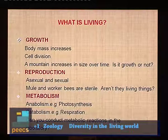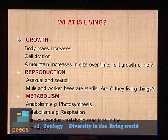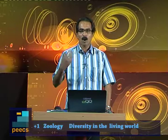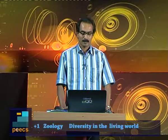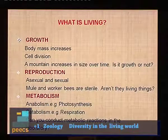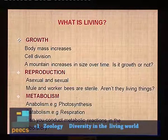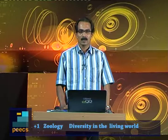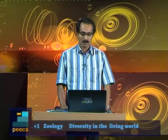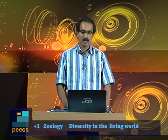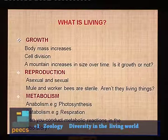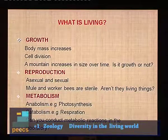Another feature of living things is metabolism. Every second in the cell of an organism, a large number of chemical reactions take place. The sum total of all these reactions is called metabolism. Metabolism can be divided into anabolism and catabolism. Anabolism is a building-up reaction — something is produced. For example, photosynthesis: carbohydrate is produced by reacting carbon dioxide and water in the presence of sunlight. Catabolism is when a big molecule is broken down into smaller ones — for example, respiration.